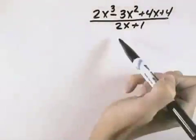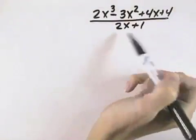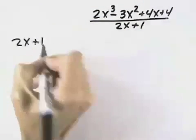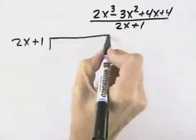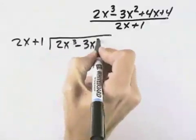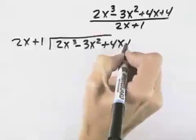Here we have a polynomial divided by a binomial. Since a binomial is two terms, we're going to use long division for this one. To have 2x plus 1, we're dividing that into 2x cubed minus 3x squared plus 4x plus 4.